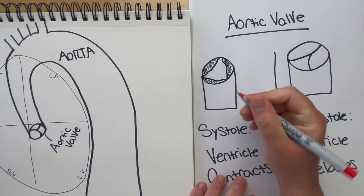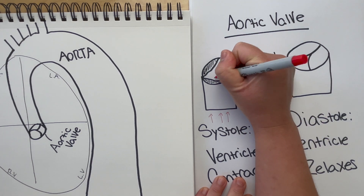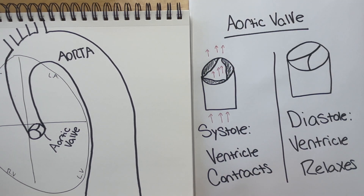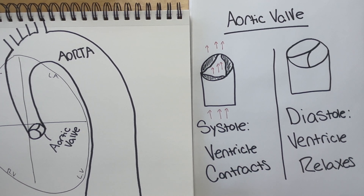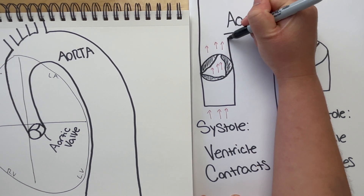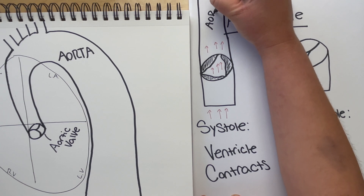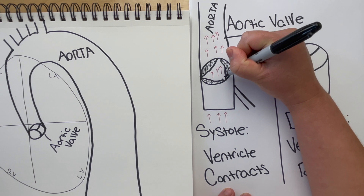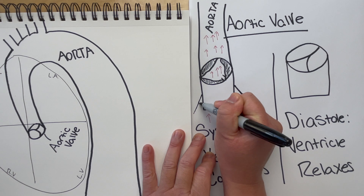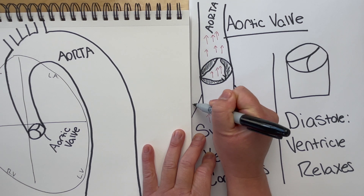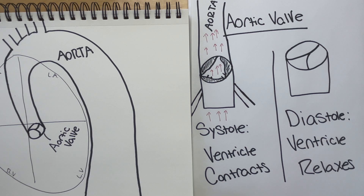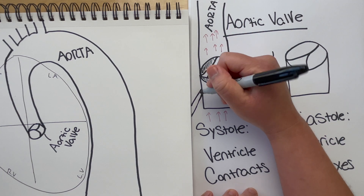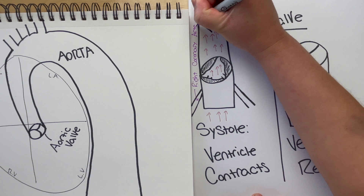Here I have a close-up of the aortic valve. On the left hand side, I'm drawing the aortic valve during systole. During systole, the ventricles are contracting and they're pushing blood up through this aortic valve, so the cusps are open and blood is flowing through them and going to the aorta. This aortic valve is special to the coronary system because this is where the right and left coronary arteries stem out from. These coronary arteries are kind of like straws — they puncture through this valve, so part of the straw is on the inside of this valve and that's how it's able to collect blood.